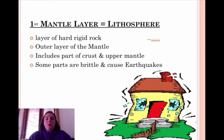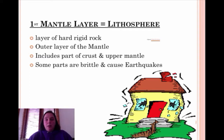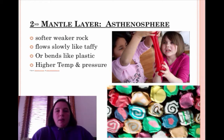The first mantle layer is called the lithosphere. It's hard, rigid rock — the outermost part. It can include part of the crust and the upper mantle, and some parts are brittle and actually are what cause earthquakes.